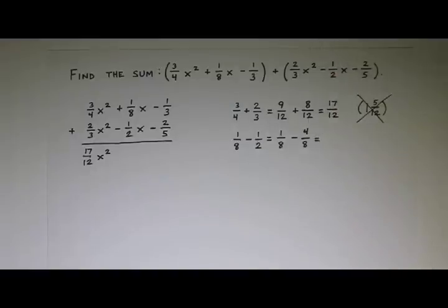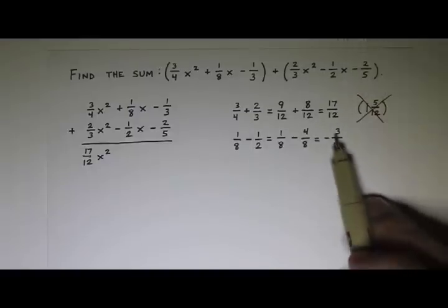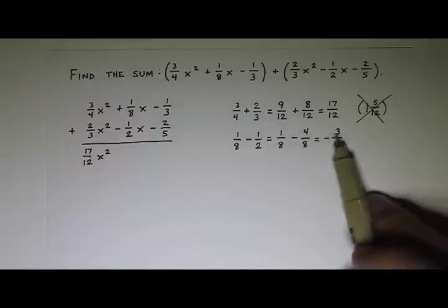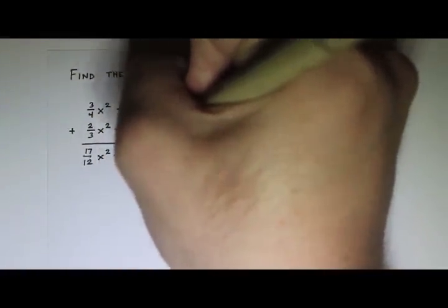And then 1 minus 4, that's -3/8. Now you could put the negative in the numerator, make it -3 over 8. But it's just the same thing to put the negative out front. It doesn't really matter. You can write it either way. So we got -3/8 x.